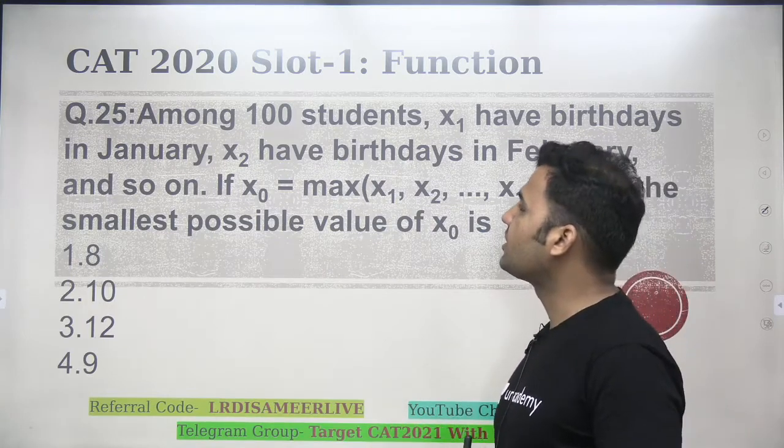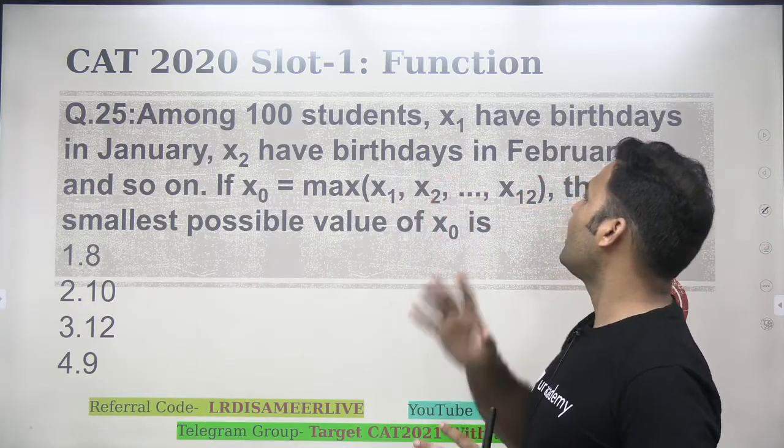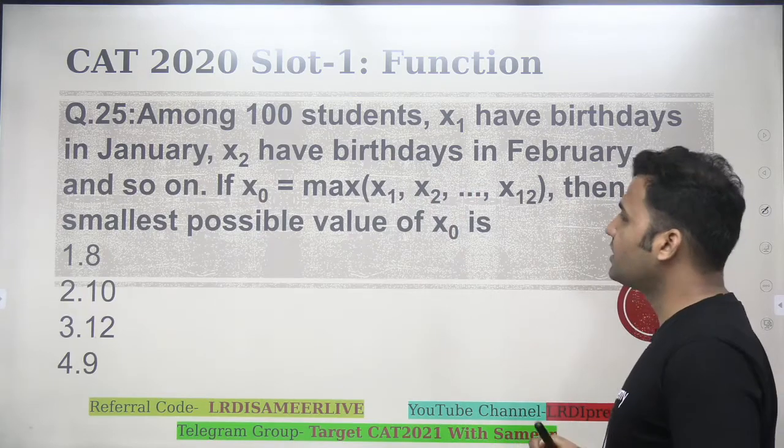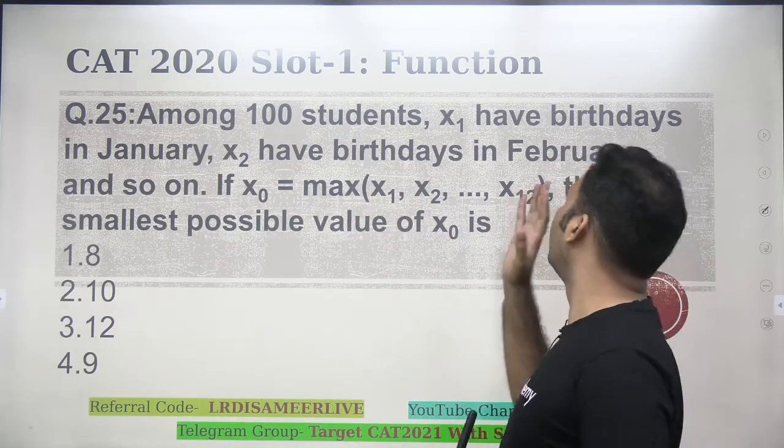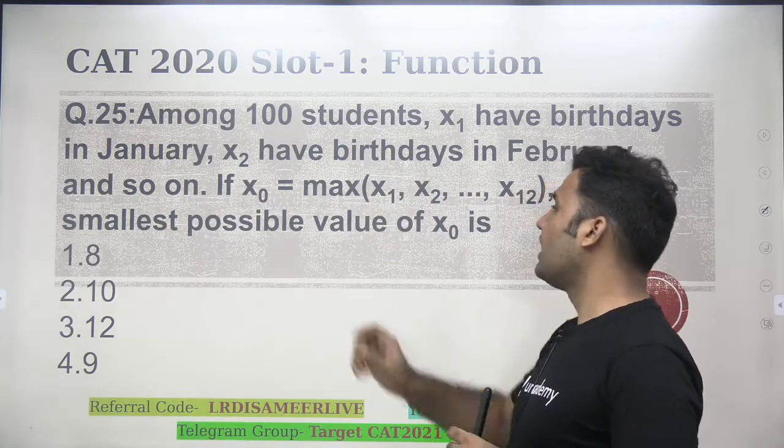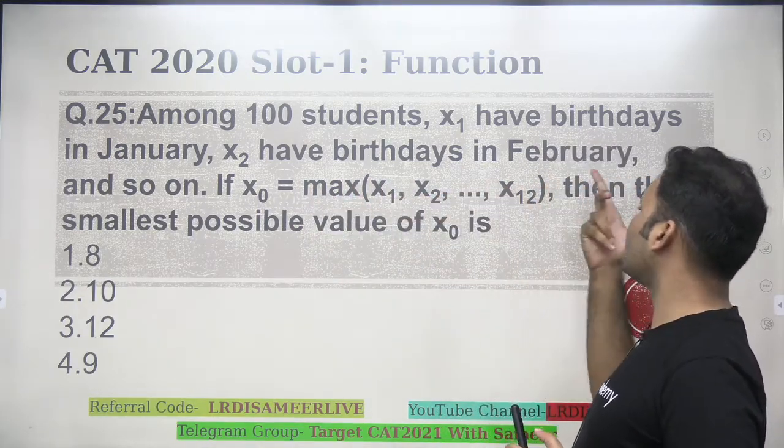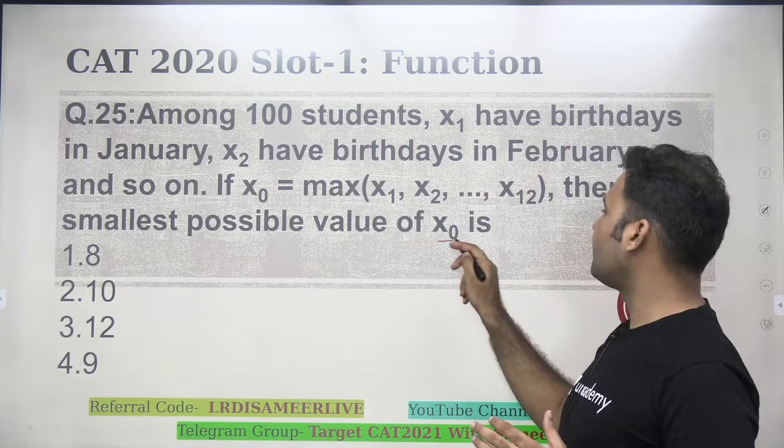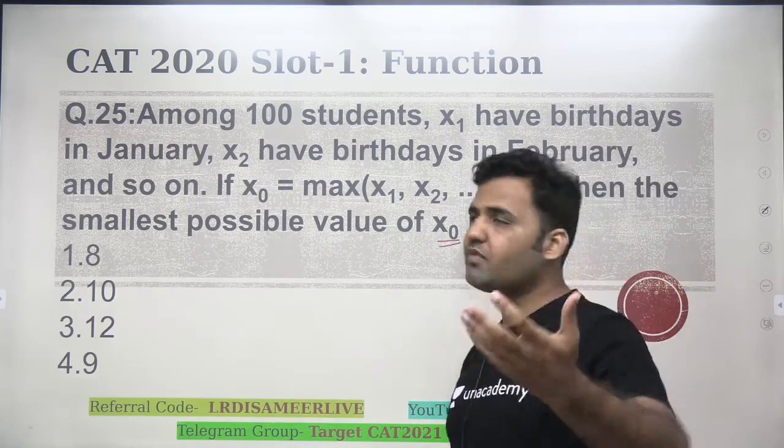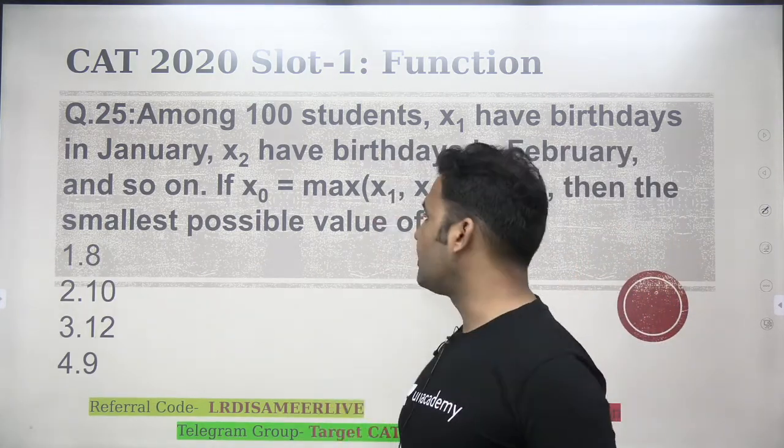a kind of function question, question number 25. It says, among 100 students, x1 have birthdays in January, x2 have birthdays in February, and so on. If x0 is max of x1, x2, up to x12, then the smallest possible value of x0 is. Let me first explain what this question is talking about, then I will discuss the solution.